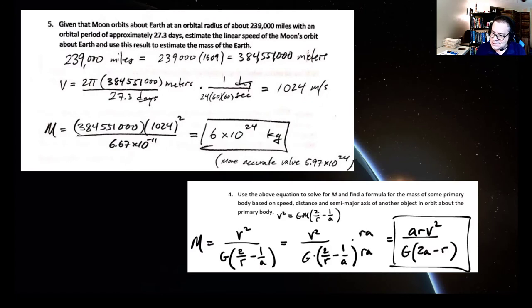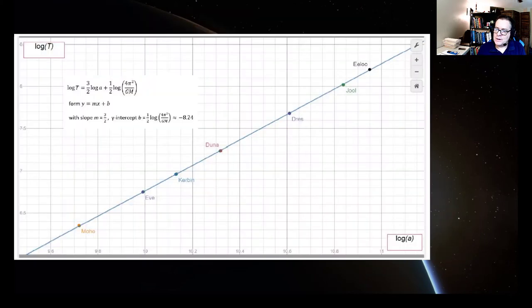For an algebra lesson, use orbit parameters to determine the mass of a planet, moon, or the sun. Teach the properties of log functions by illustrating Kepler's third law with an example other than our own solar system.